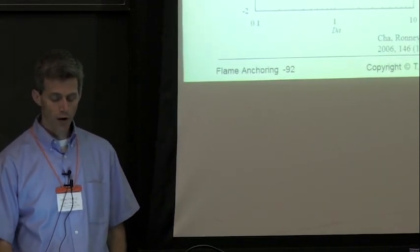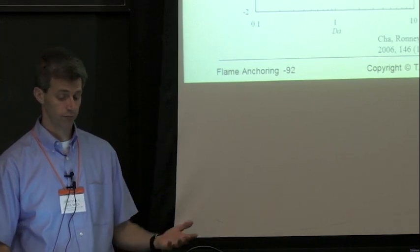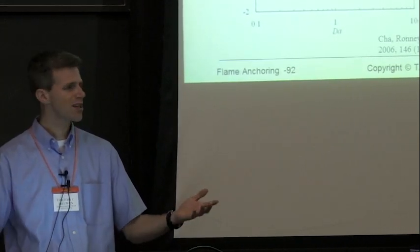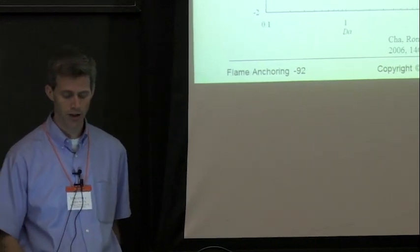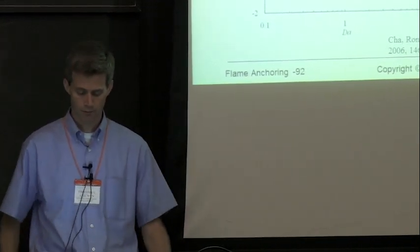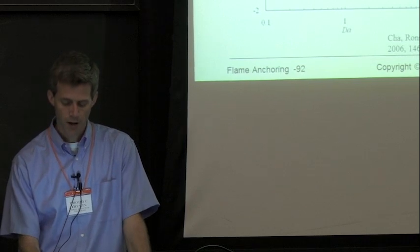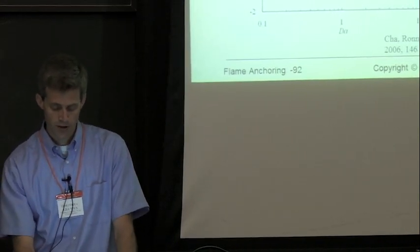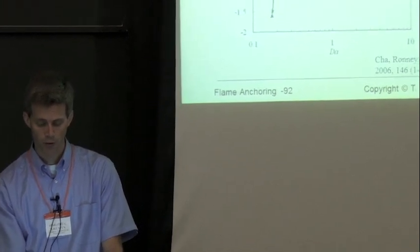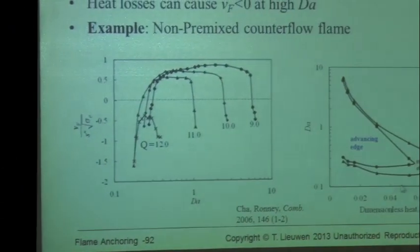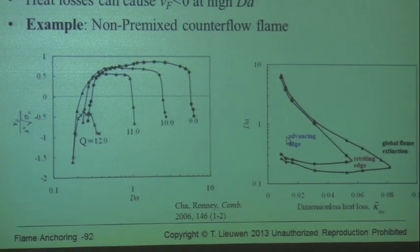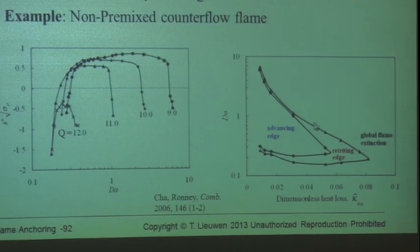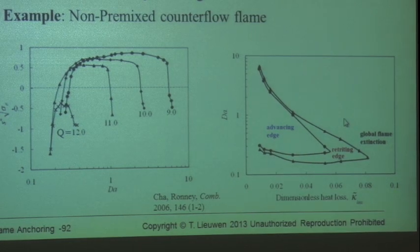Heat losses can actually cause negative edge speeds, or basically extinction, even in high Damköhler numbers. I don't think that would be surprising to any of you, but it's borne out. Here's some data from Paul Rani — data for non-premixed flame Damköhler numbers and heat losses — showing that if you get too much heat loss, you go from an advancing front to a retreating front or global extinction.